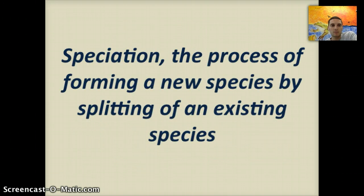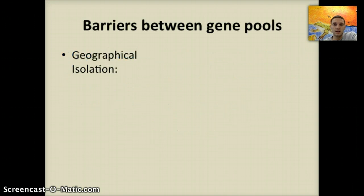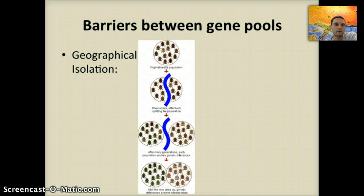Speciation is the process of forming a new species by splitting of an existing species. In this video we'll look at some different ways this can actually happen. The first thing we want to examine is barriers or things that separate gene pools. The first one is called geographic isolation, probably one of the more common and easily understood examples of barriers between gene pools.